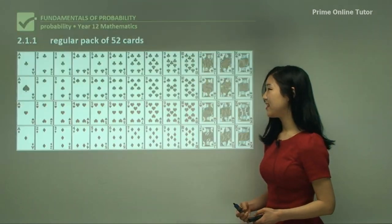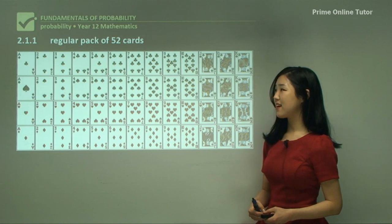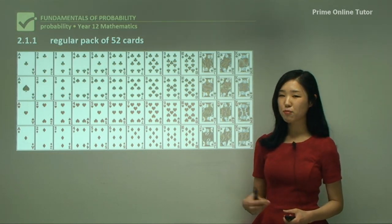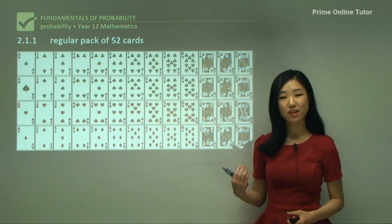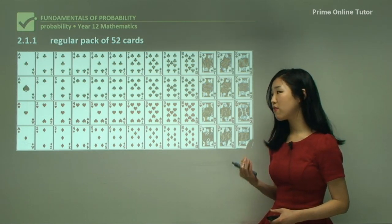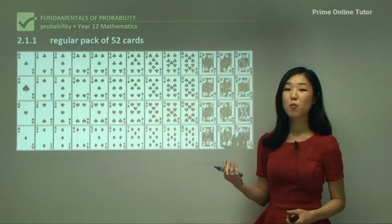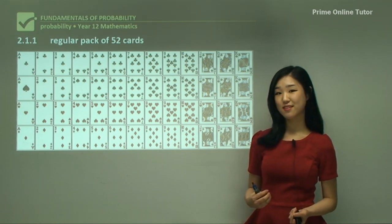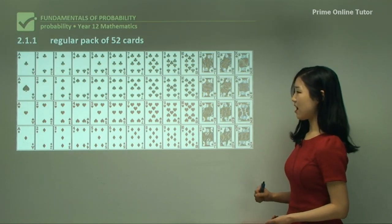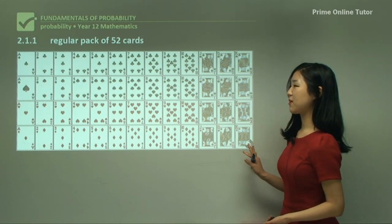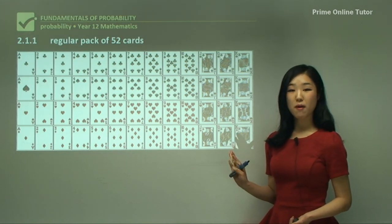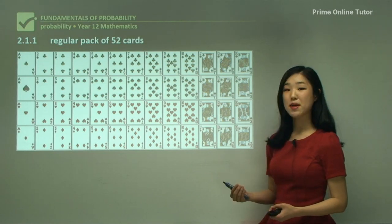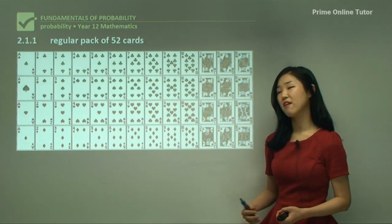Let's get started. I'm going to start off with a regular pack of 52 cards, because a lot of probability questions will relate to cards. So you must know very well what a pack of cards consists of. You can see over here I've got pictures of all the cards, and you have to know how many of each and what different colors there are.